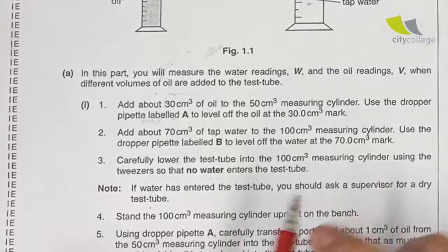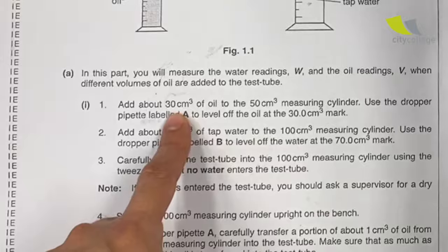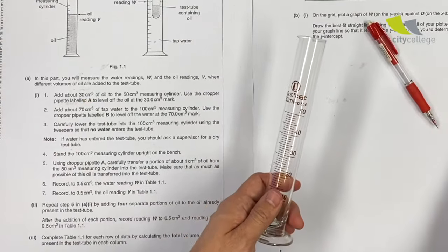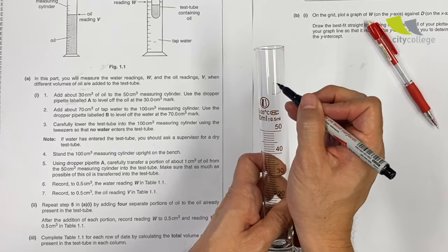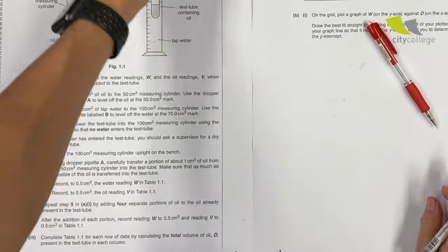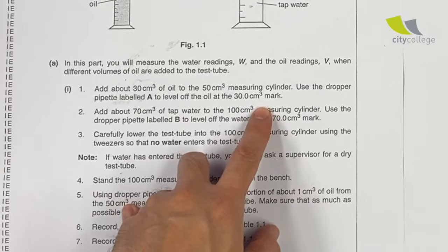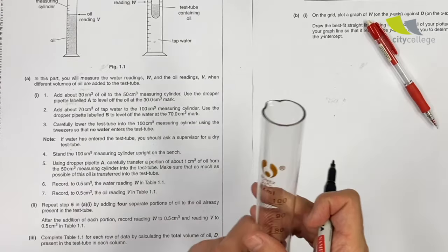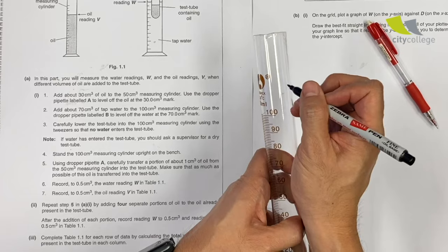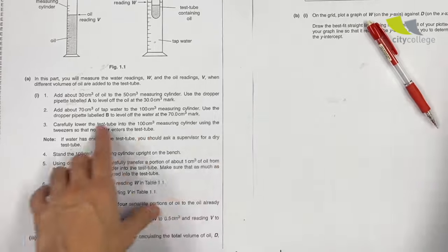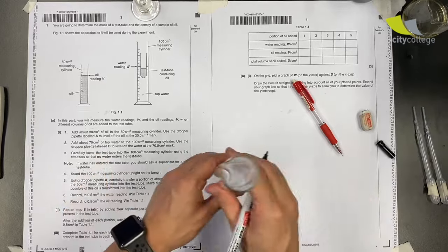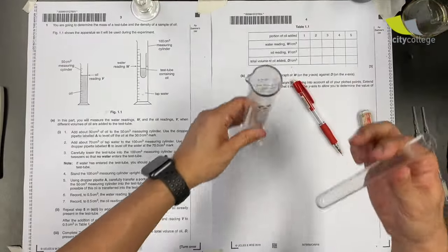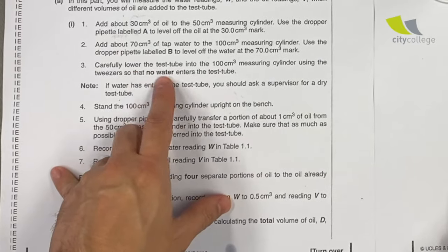So I have a 50 cm³ measuring cylinder, a 100 cm³ measuring cylinder, and a test tube. I'm supposed to add about 30 cm³ into the 50 cm³ measuring cylinder, then level it at the 30 cm mark. Then I'm going to add about 70 cm³ of tap water into the 100 cm³ measuring cylinder.